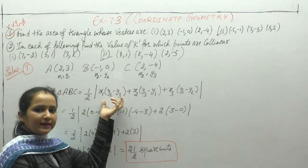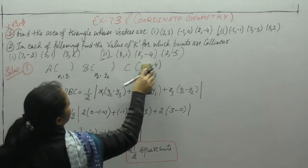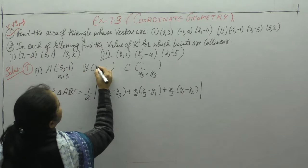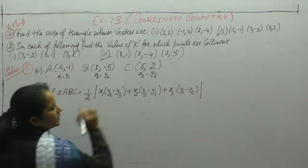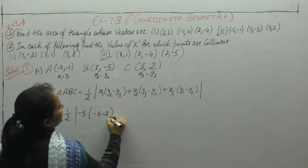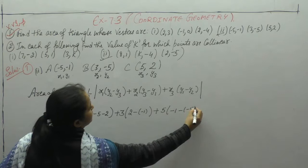Simply formula में values put करनी है and then solve. Now next is second part. Second part में coordinates given हैं: (-5, -1), (3, -5), and (5, 2). Area find करने है, formula में values apply करेंगे. x1 is -5, y2 minus y3, plus x2, y3 minus y1, plus x3, y1 minus y2.